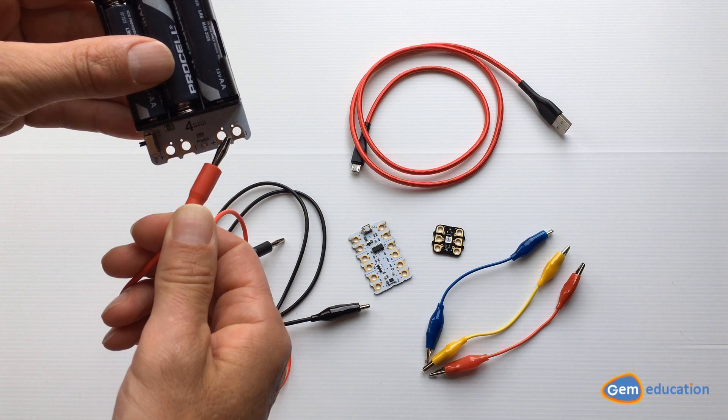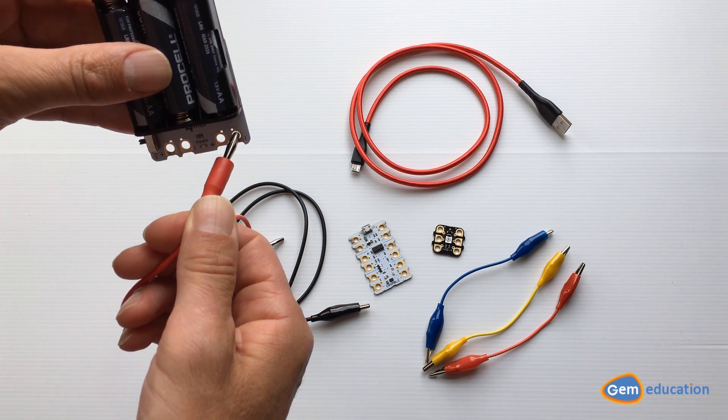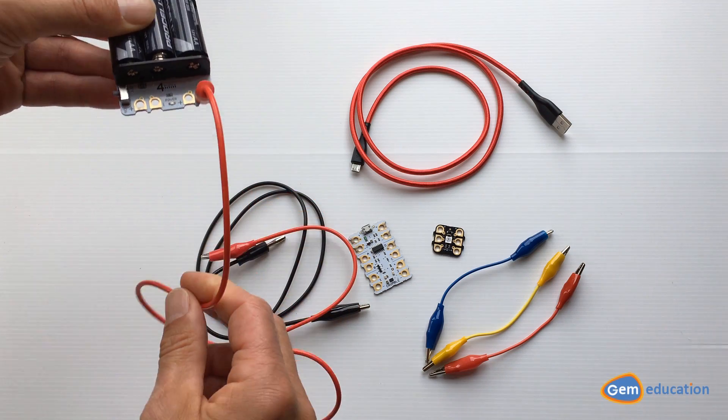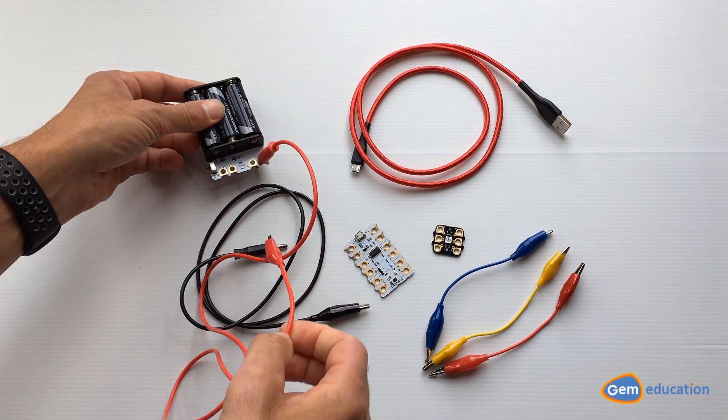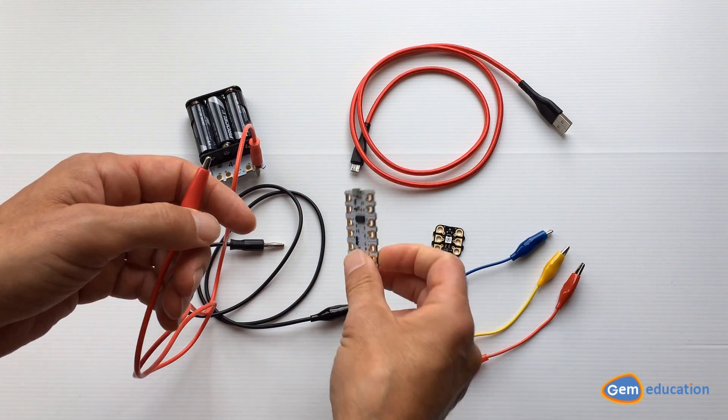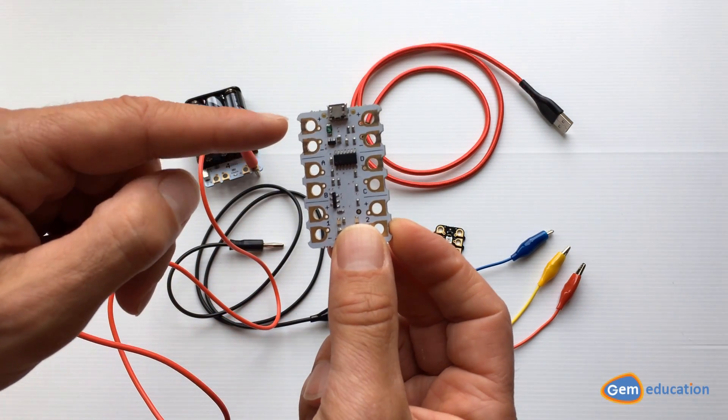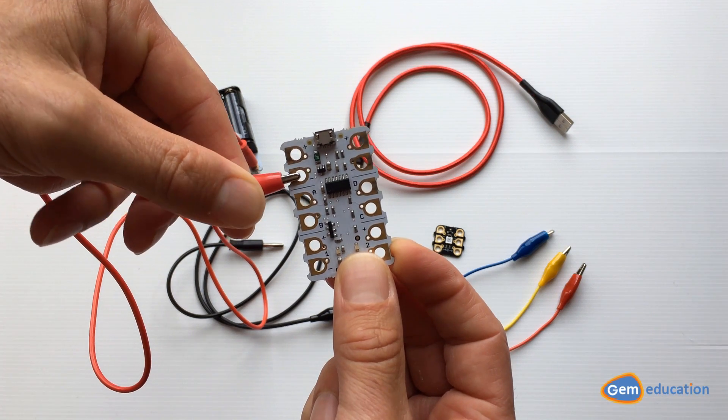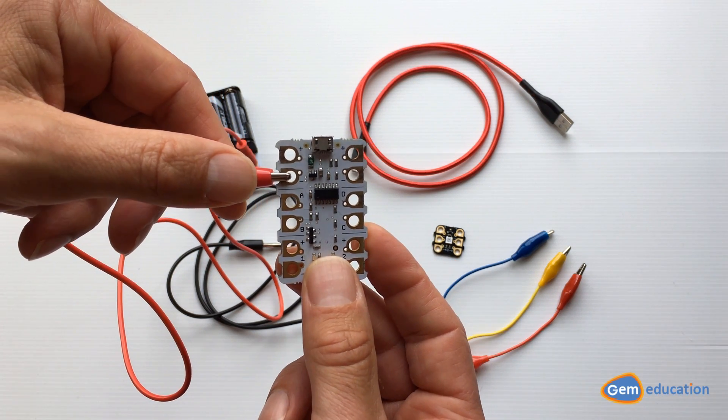With that lead, I'm going to connect it to the minus on the top left of my crumble, to the brass plate there. If you want a secure connection, you could push the crocodile clip into the hole there.